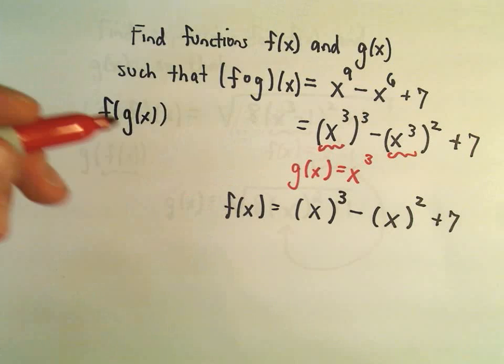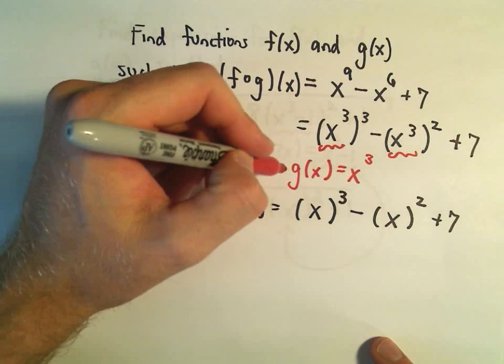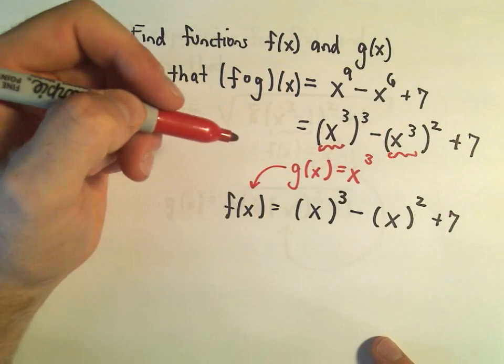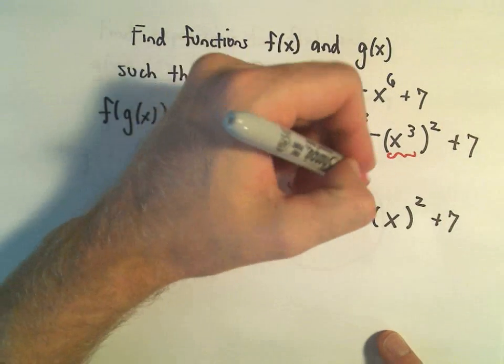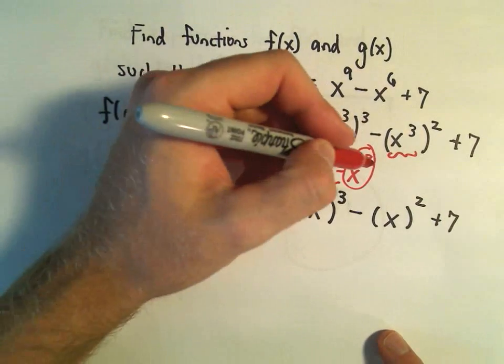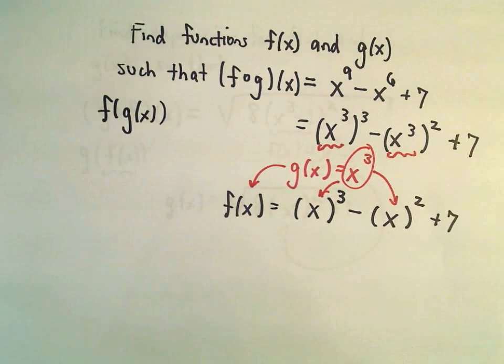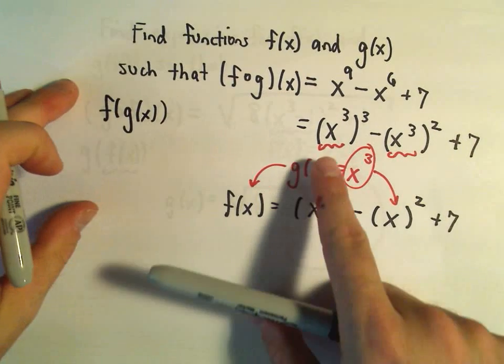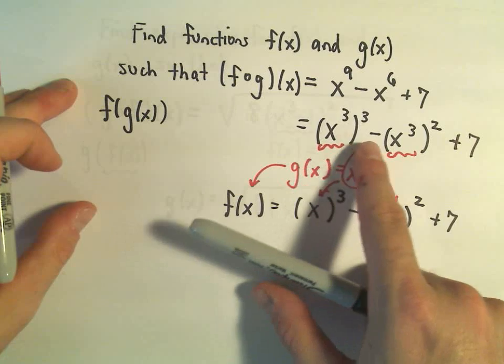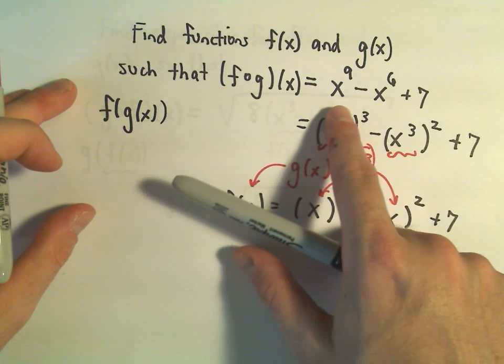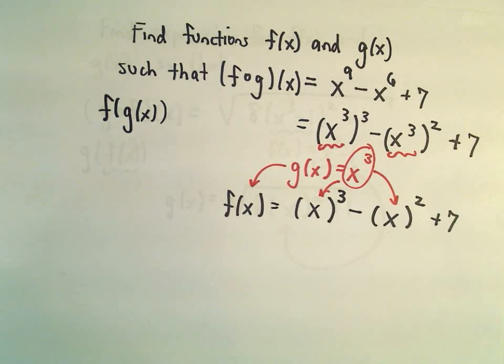Because again, if I plug g(x) into my f(x), everywhere there's an x, I'm going to put in x³. I'm going to put in x³. And if I do that, again, I'll simplify and get (x³)³ - (x³)² + 7. Which again, would give me the very original composition that we wanted.